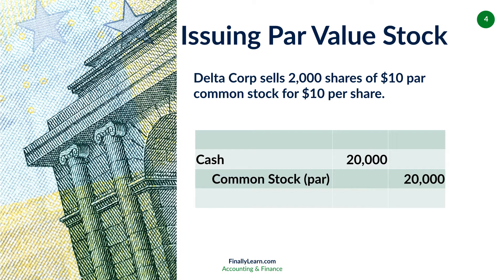So Delta Corp sells 2,000 shares of $10 par common stock for $10 per share. Here, the market price of $10 equals the $10 par. So we sell the stock, we receive cash of 2,000 shares times $10 per share — we receive cash of $20,000. The common stock is going to be $20,000 as well because it is at par value: 2,000 shares times $10 per share. Pretty easy.